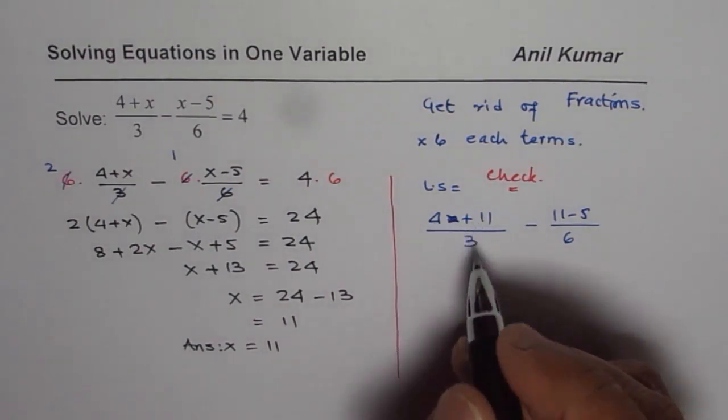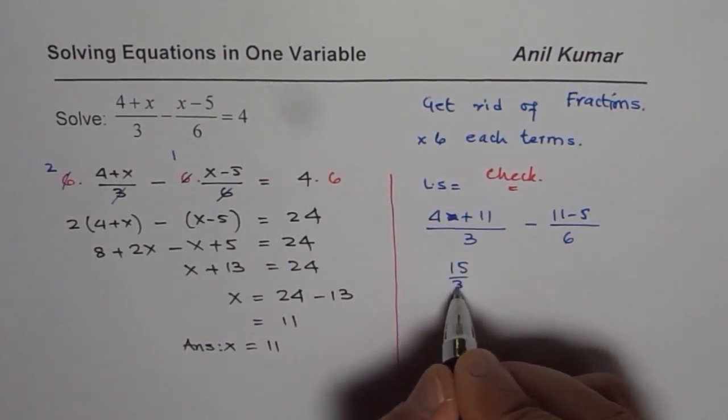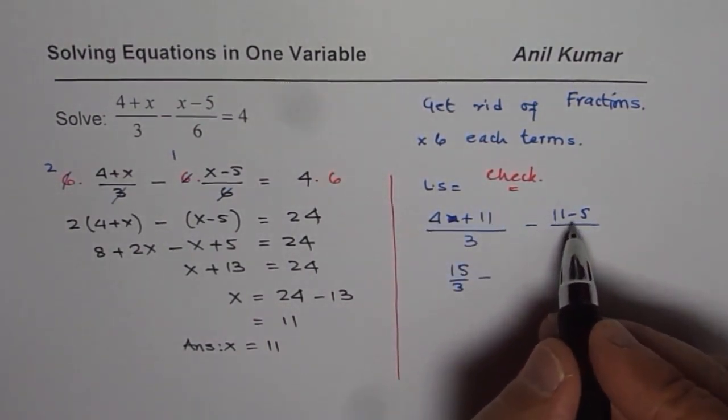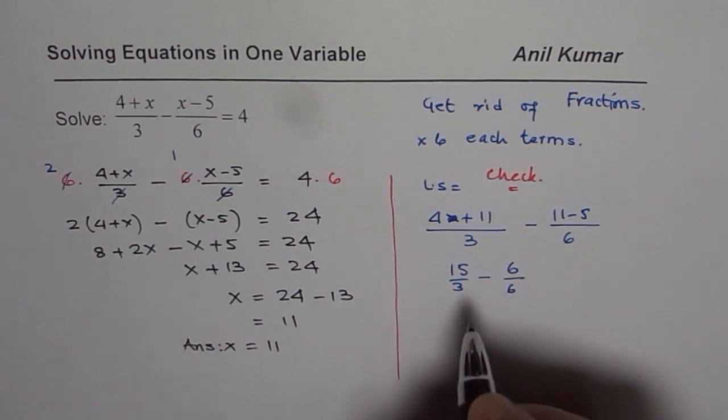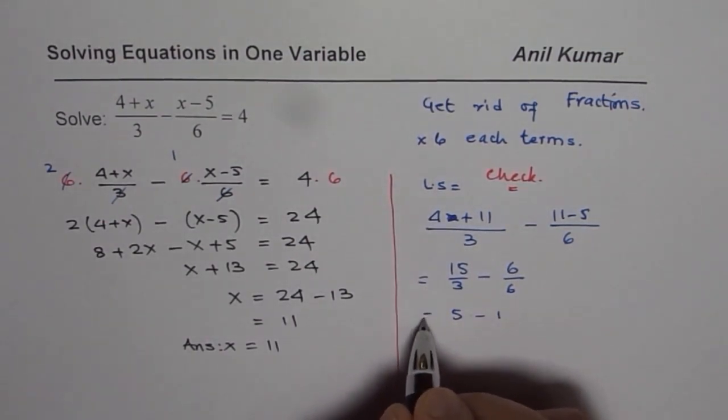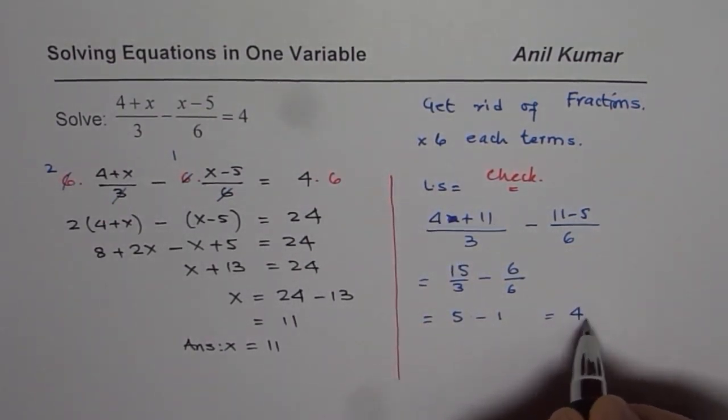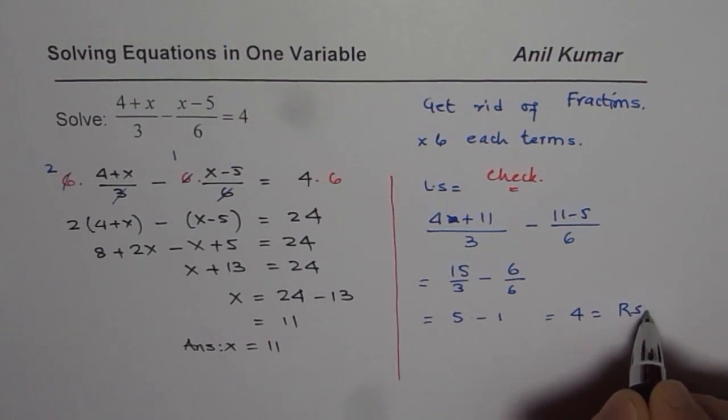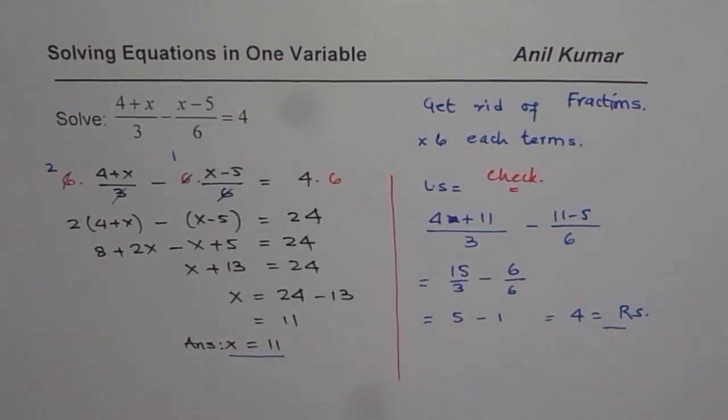So we have 4 plus 11 as 15. 15 over 3, minus 11 minus 5 is 6, 6 over 6. 15 over 3 is 5, 6 over 6 is 1, so 5 minus 1 equals 4, which is the same as the right side. So the solution x = 11 works.